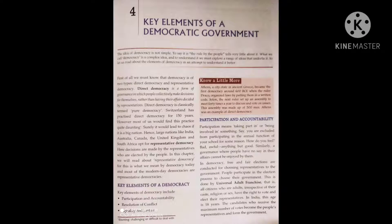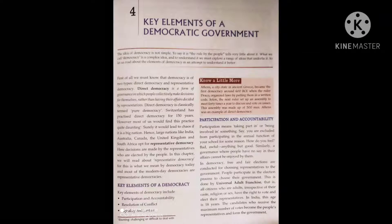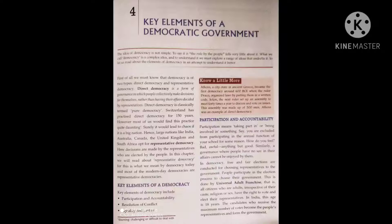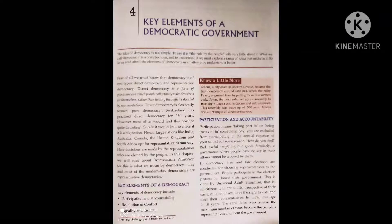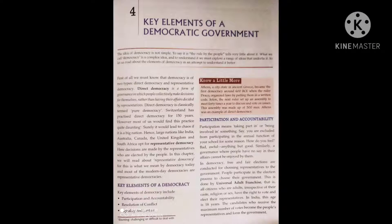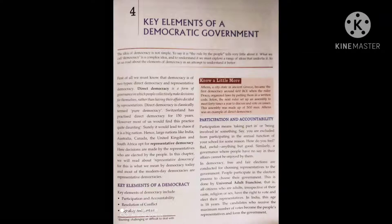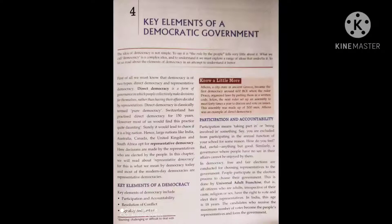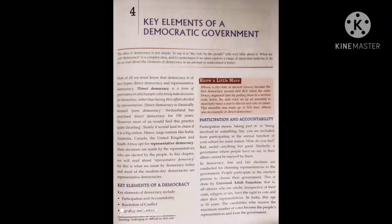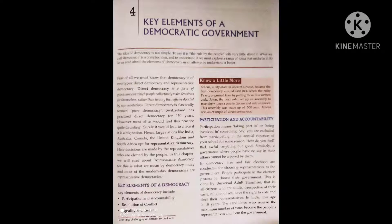In a democracy, free and fair elections are conducted for choosing representatives to the government. People participate in the election process to choose their government. This entire process is conducted by the Election Commission through universal adult franchise.